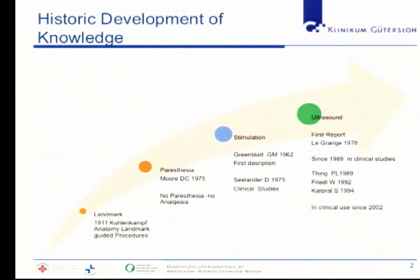When we go to the historic development of the actual knowledge in this field, we can talk about what went on in the last 100 years. The landmark technique was established by a German physician, Kuhlenkamp, who tried to use anatomy landmarks for guided procedures and started with the first blocks in this area. Paresthesia was described by Moore in 1975, and stimulation had its first clinical description from Greenblood in 1962, but came into clinical practice from Dart Cylinder in 1975.